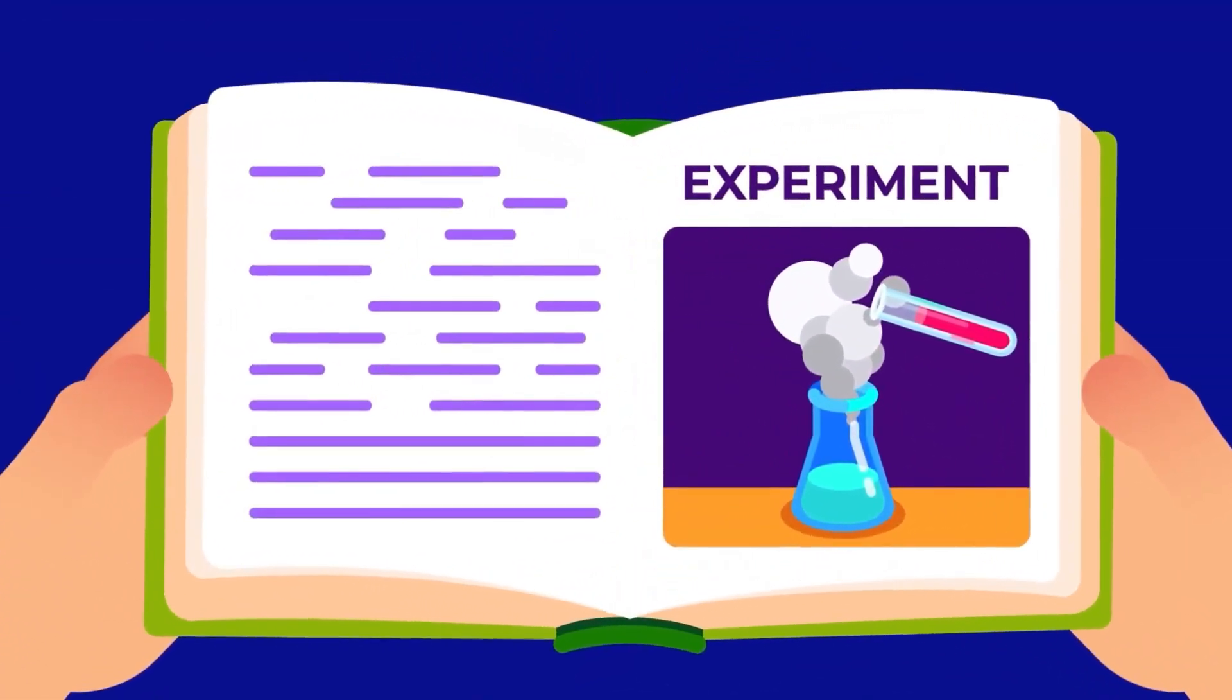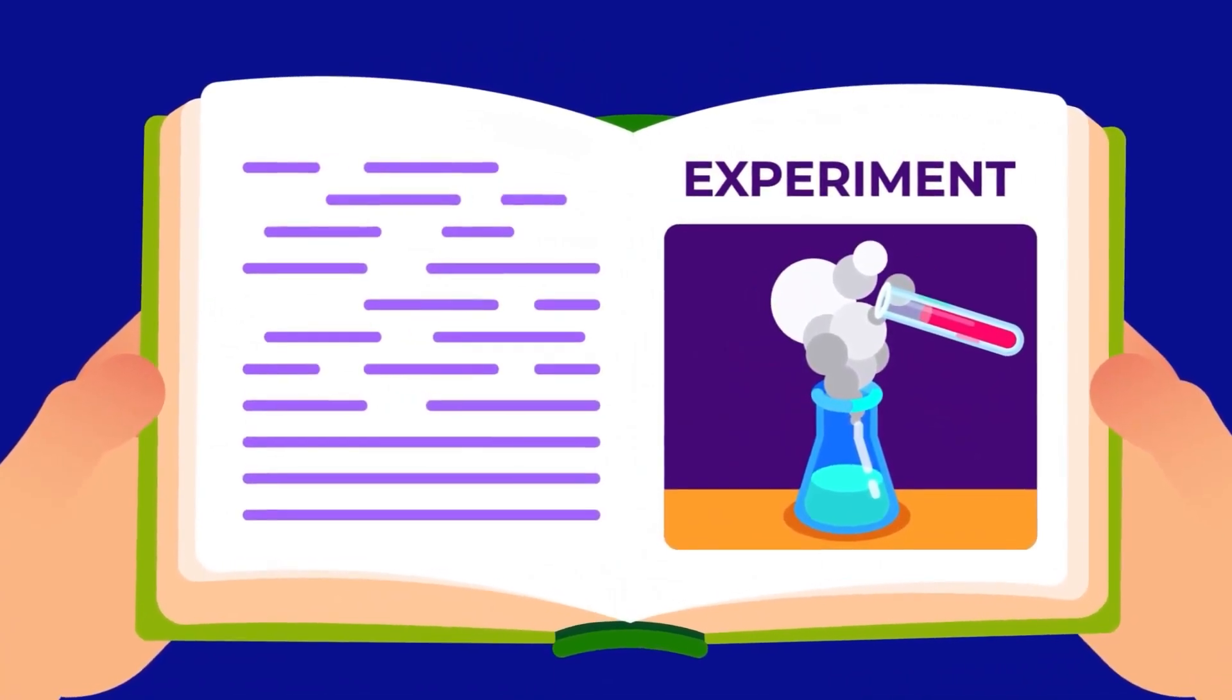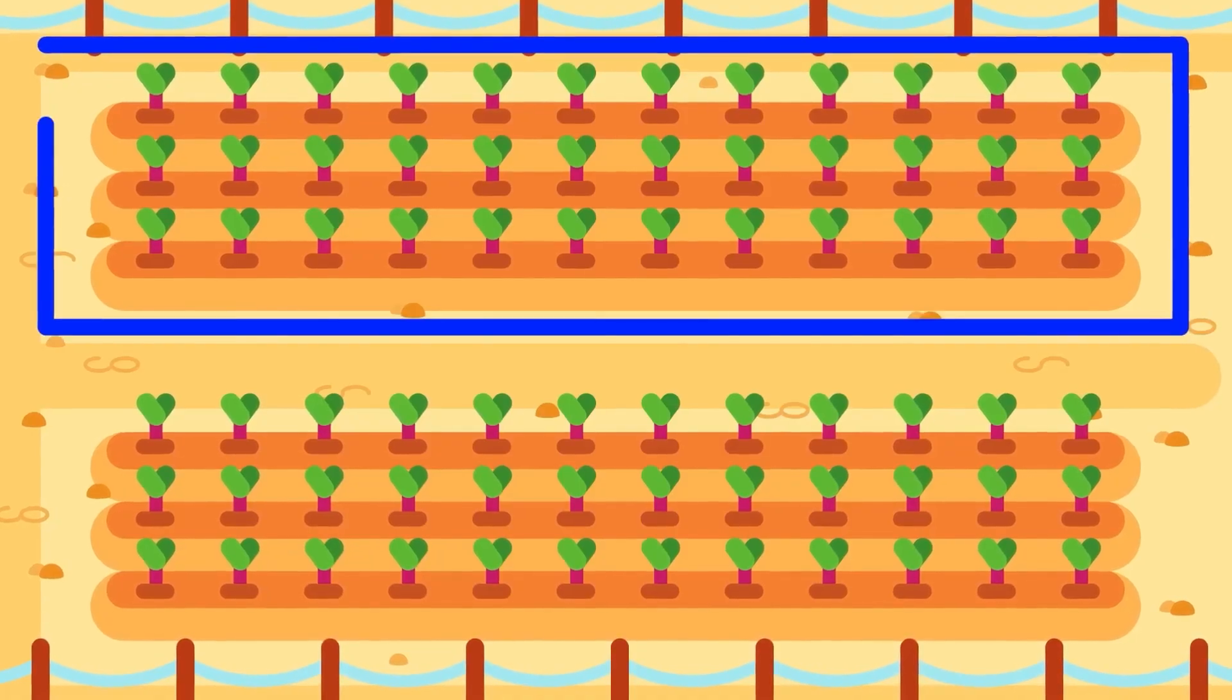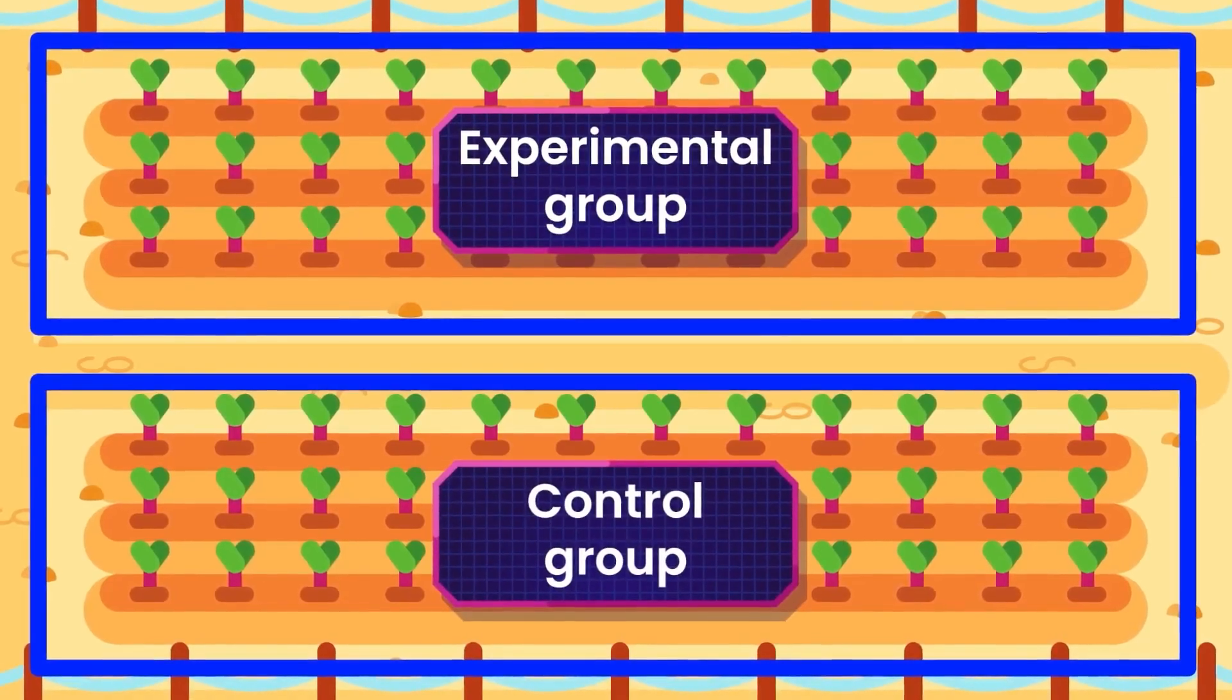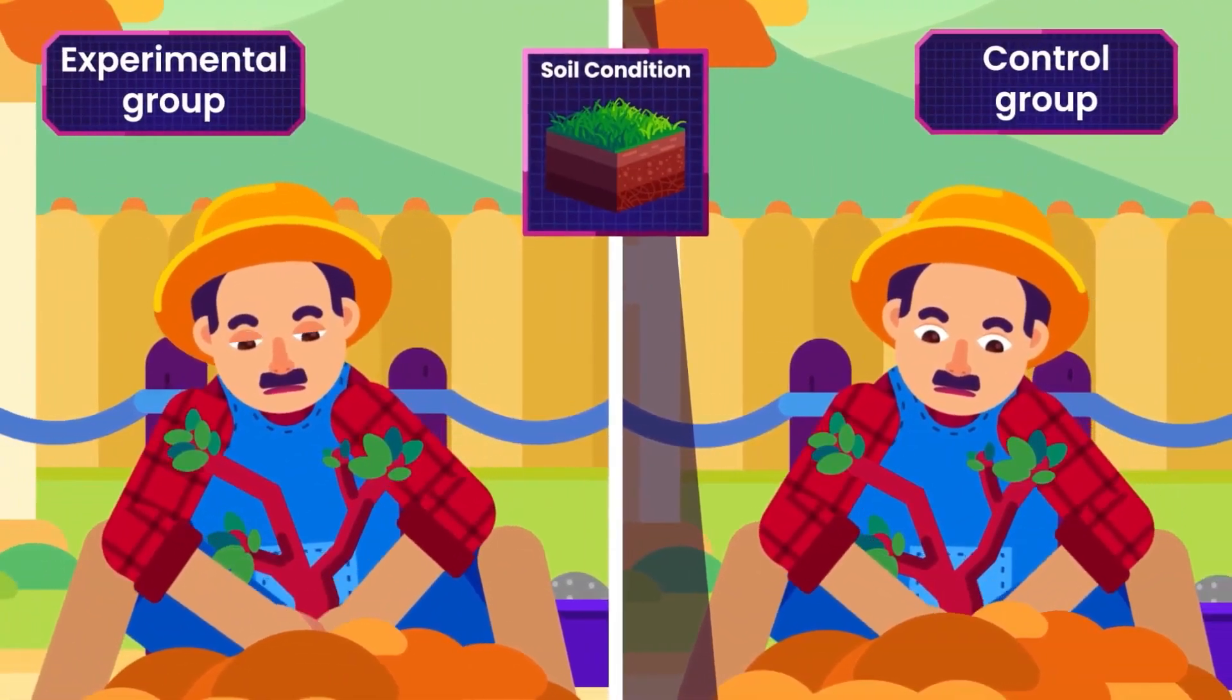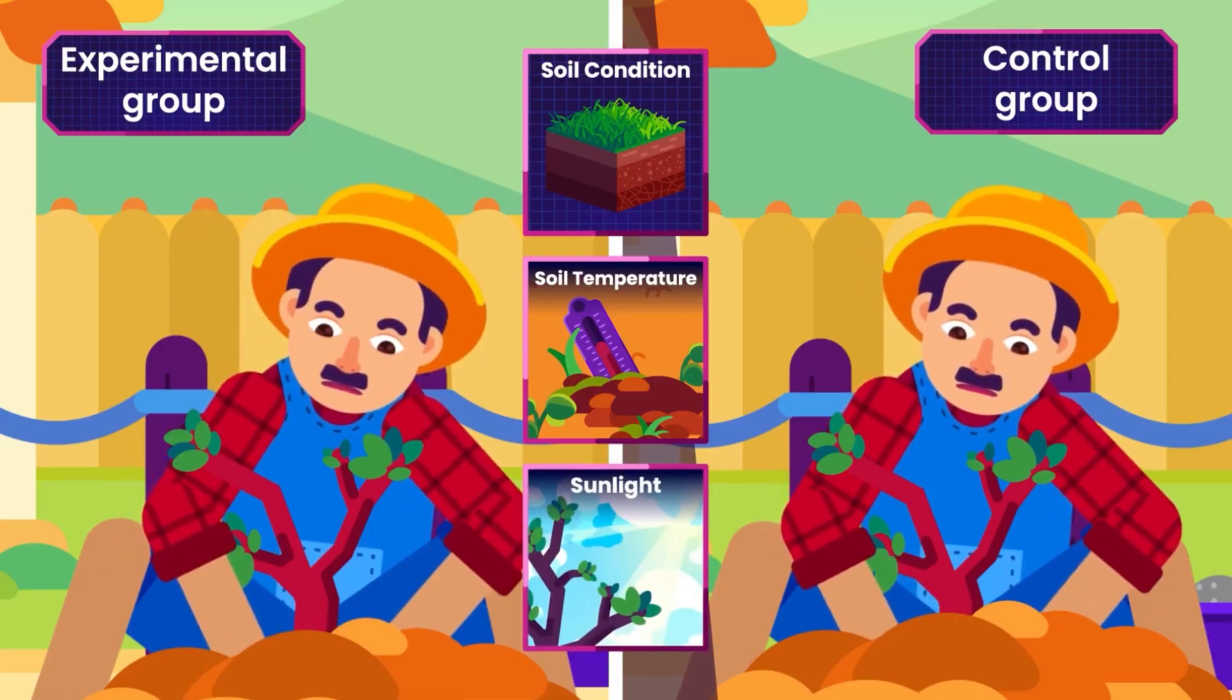To test the hypothesis, let's design an experiment, where you can manipulate variables or factors. Start by creating an experimental group and a control group. Keep all factors, such as soil condition, soil temperature, and sunlight, the same,